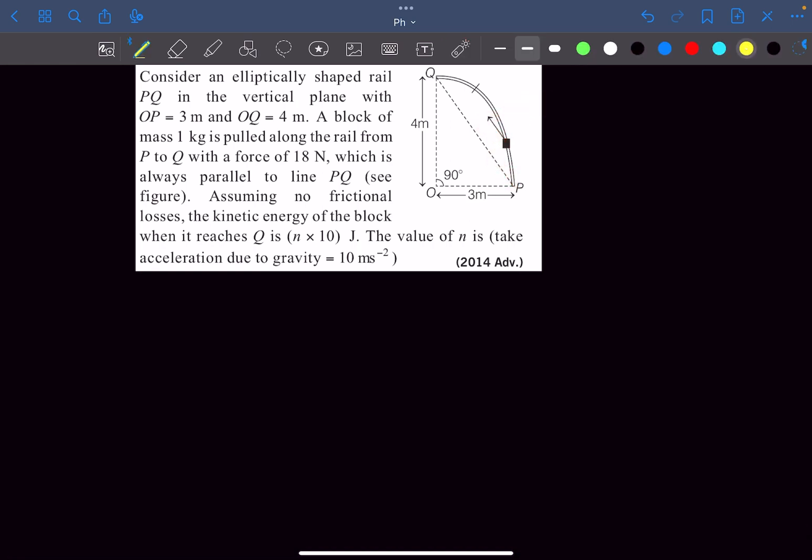The force that pulls this block is given to be 18 Newton and it's a constant force, always along the line PQ. From here we can say the work done by force F on the block is going to be the force which is 18 multiplied by the displacement of the block in the direction of the force F.